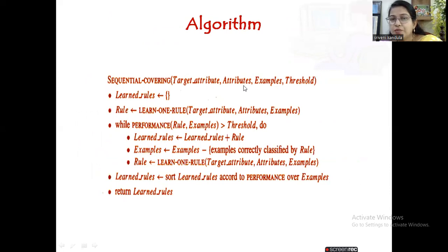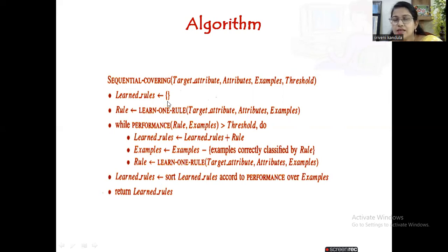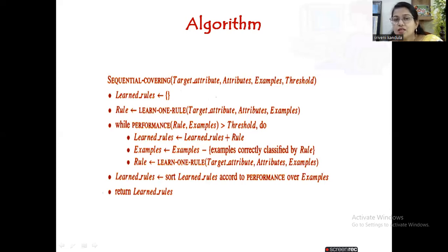The sequential covering algorithm accepts the target attribute, the set of attributes, examples, and a threshold value. The threshold acts as a heuristic. Initially, the learned rules are empty. Using the target attributes and examples, we invoke the learn one rule algorithm, which outputs a rule. We then check if the performance of that rule on the examples is greater than the threshold value — for example, if the threshold is three and the rule correctly classifies three positive examples, the rule is acceptable.